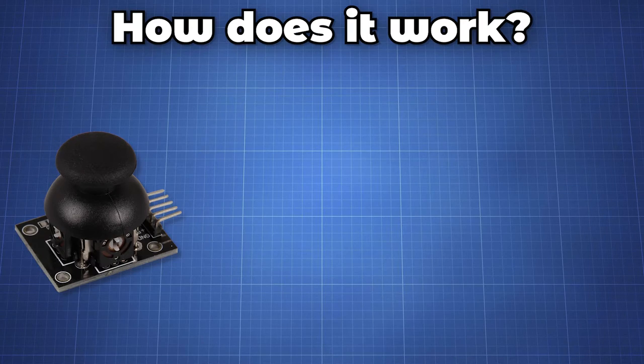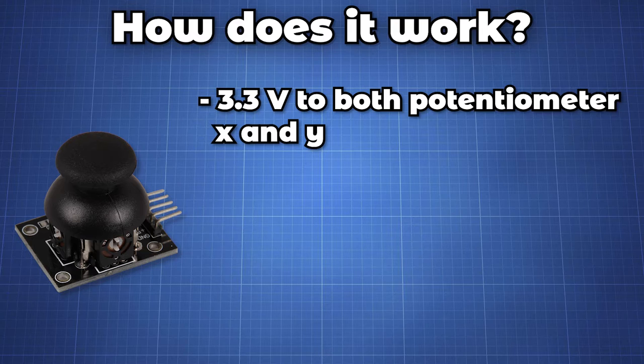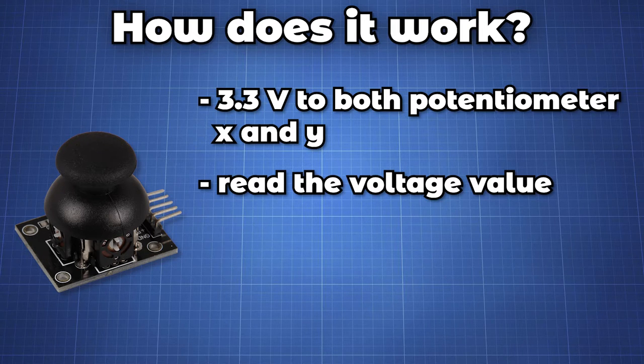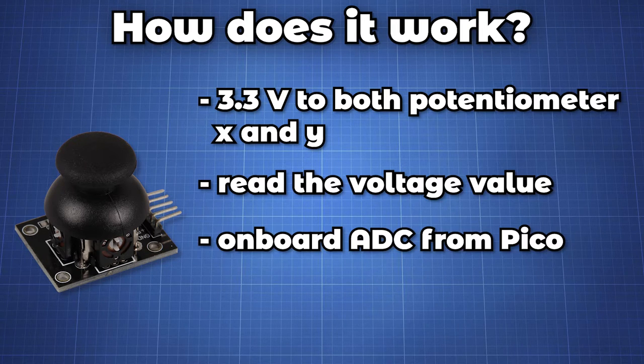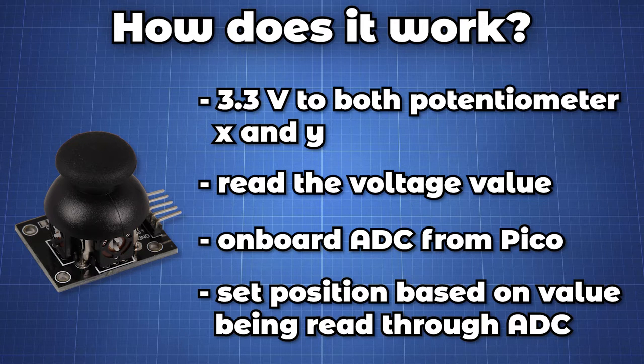So how this works is that when we apply 3.3V to both potentiometers, we read the voltage value through the onboard analog to digital converter and set the position of the joystick based on the value we read for the x and y potentiometers.